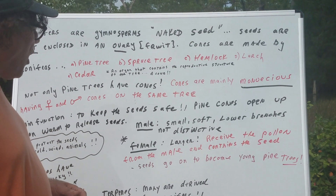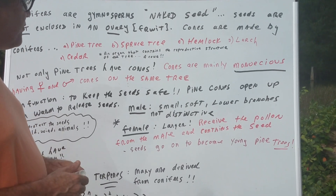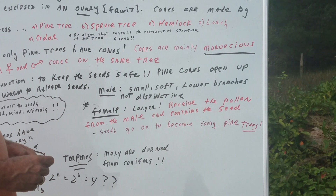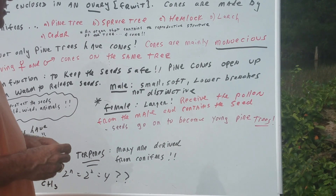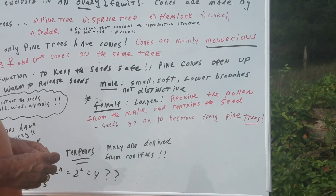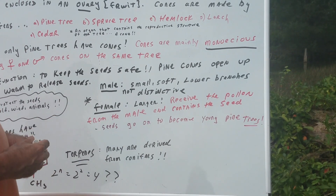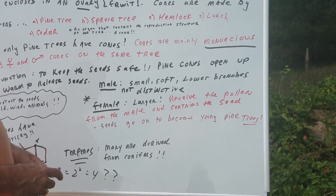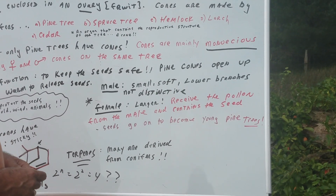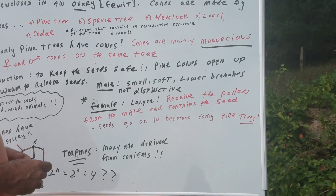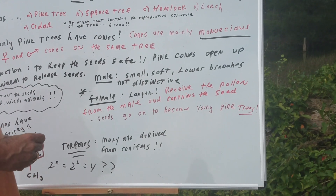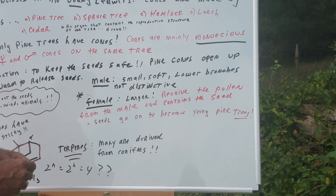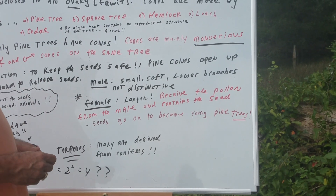The male pine cone is very small, soft, and found in the lower branches. You might not even notice them — they're not very distinctive. The female is the one we think of at Christmas time for decorations. You see them on the ground. They receive the pollen from the male, and it contains the seeds. The seeds go on to become young pine trees.